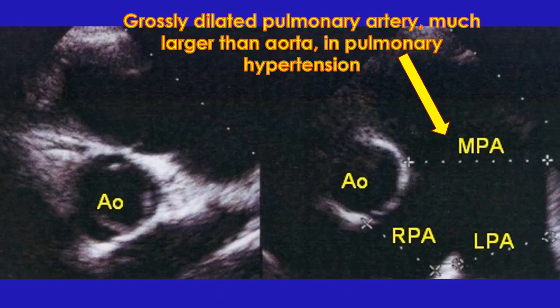Dimensions of the great vessels — aorta and pulmonary artery — have to be checked. A dilated aortic root can produce aortic regurgitation due to poor coaptation of aortic leaflets. In an emergency situation, an aortic dissection flap may also be noted in the ascending aorta. Pulmonary artery is dilated in left-to-right shunts and pulmonary hypertension. Rarely, it could also be idiopathic dilatation of the pulmonary artery.